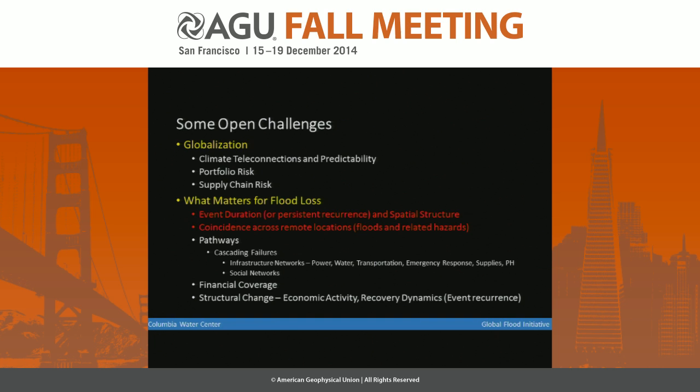Step two is this idea of portfolio risk. Let's say I'm a large insurance company and I've insured assets in many, many places. What is my likely hit in any given year, and what's the probability distribution of that? How do I do that given that the climate has a structure? Or I could be an agency like the Army Corps of Engineers with a lot of assets managed across the whole country, and ask exactly the same question.